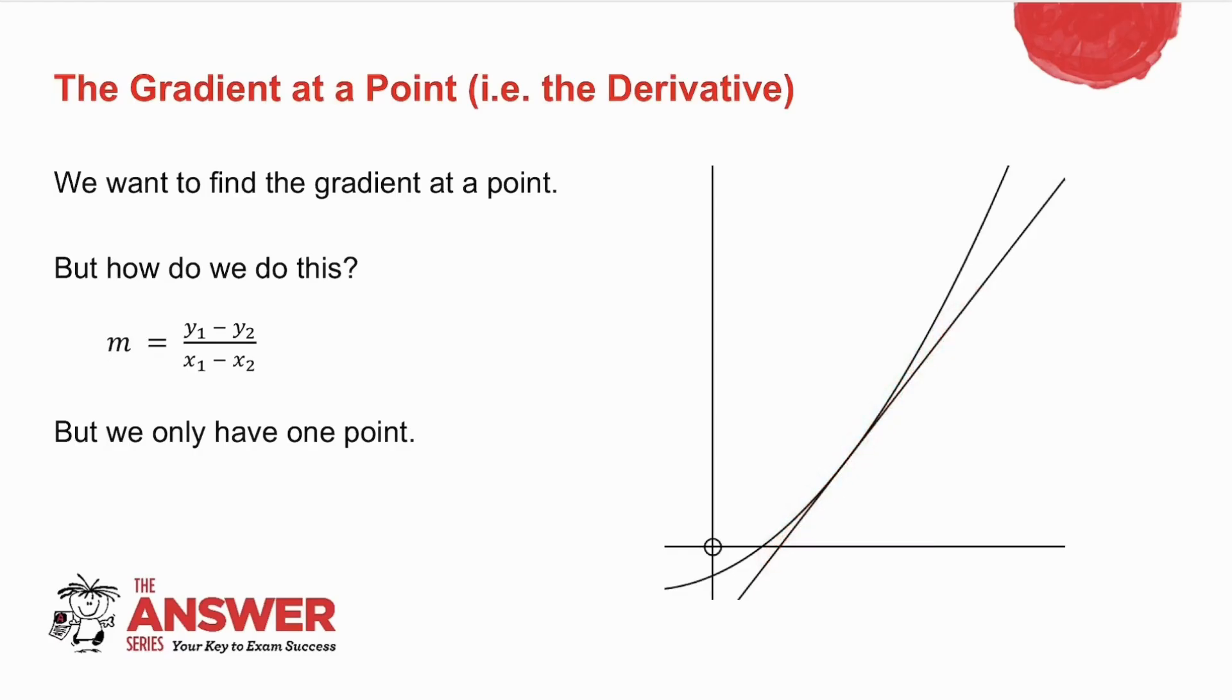Now we know that the gradient is y₁ minus y₂ over x₁ minus x₂, but I can only use that formula if I have two points. I only have one point.